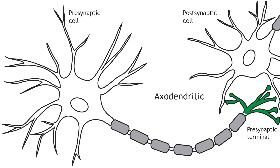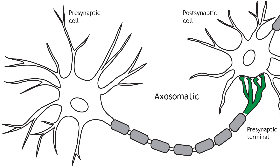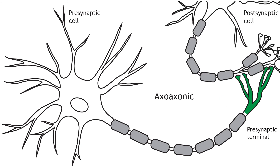As we discuss synaptic transmission, we will focus mainly on axodendritic synapses, in which the presynaptic terminal synapses on the dendrites of the postsynaptic cell. But synapses can also be located between the terminal and the cell body of the postsynaptic cell, called axosomatic, or even between the terminal and the axon of the postsynaptic cell, called axoaxonic.